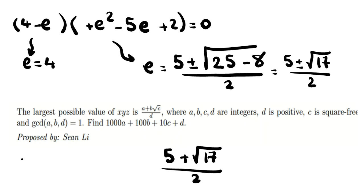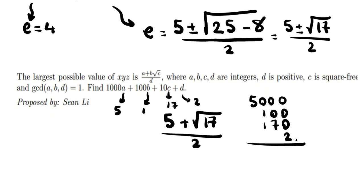a = 5, b = 1, c = 17, d = 2. So it's 5000 + 100 + 170 + 2. If we add up all these numbers, it will be 5272.